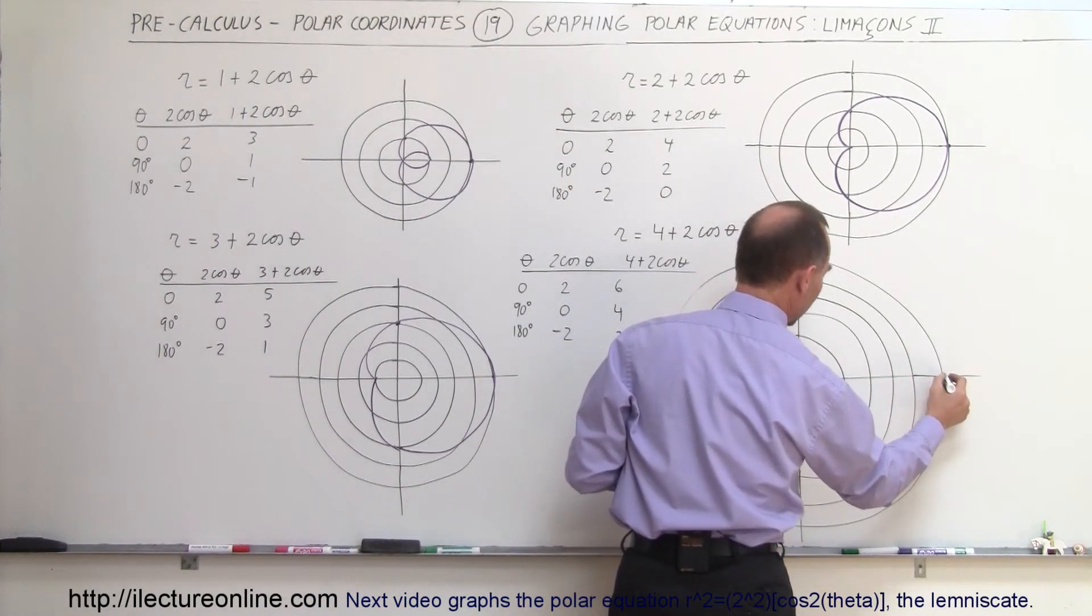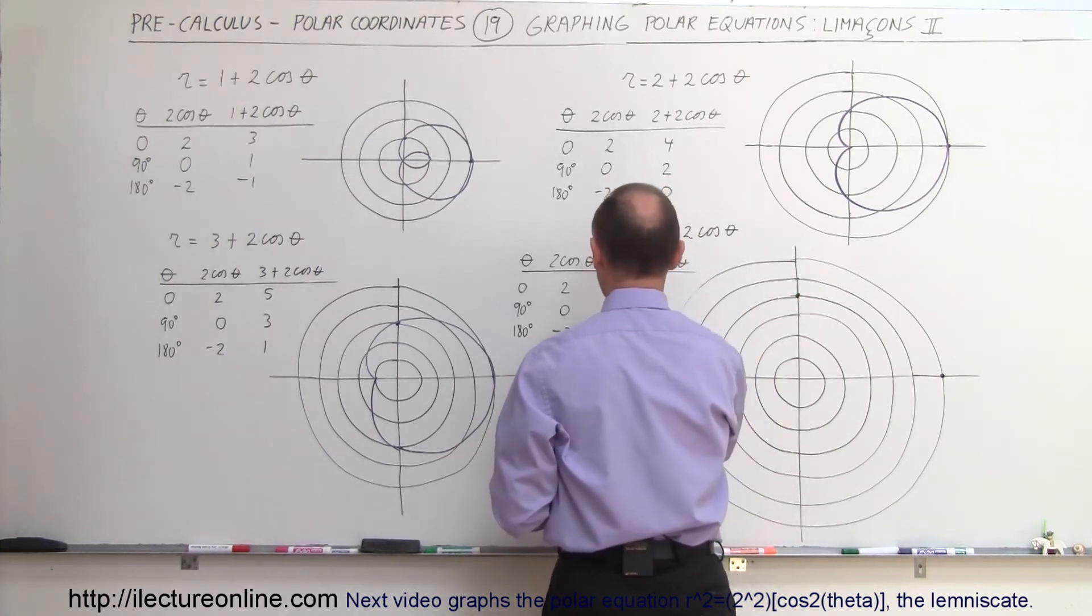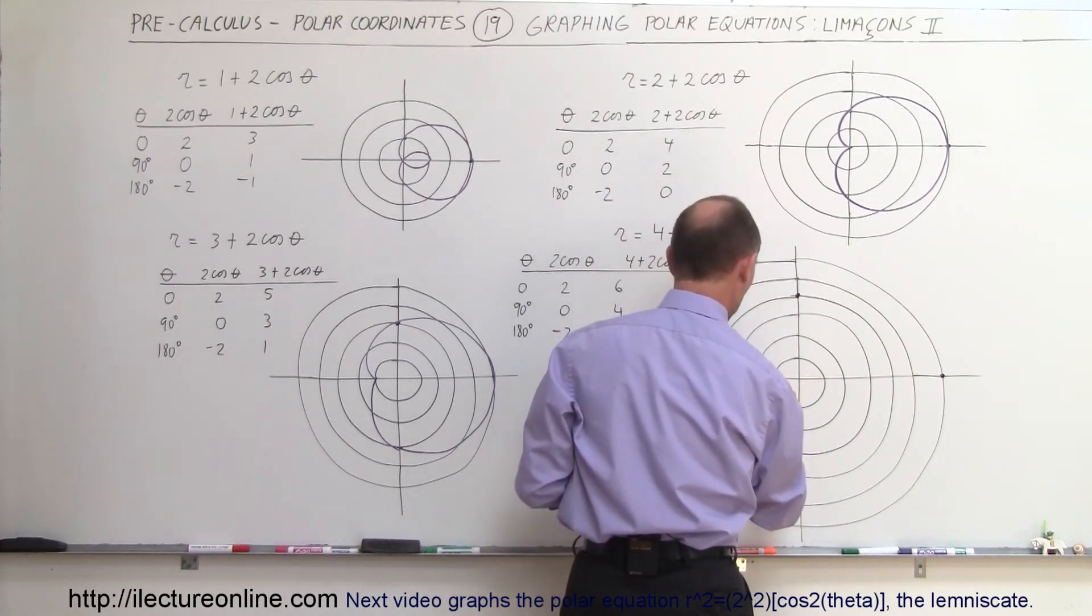1, 2, 3, 4, 5, 6, right here. At the 90 degree angle, so we come up here, now value of 4, and at the 180 degree angle, we have a value of 2, which is right there.